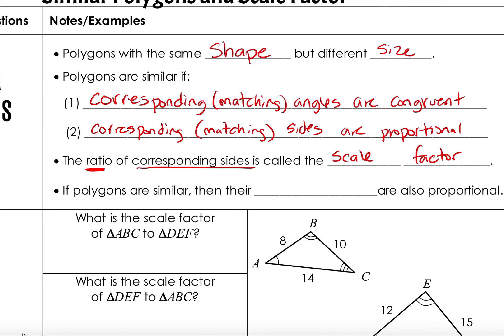We talked about this when we talked about dilations — remember back when we covered transformations? Dilation was when we made a figure bigger or smaller by a scale factor. We're going to be finding that scale factor, that ratio. And if polygons are similar, their perimeters are also proportional — they have the same scale factor as the sides do.